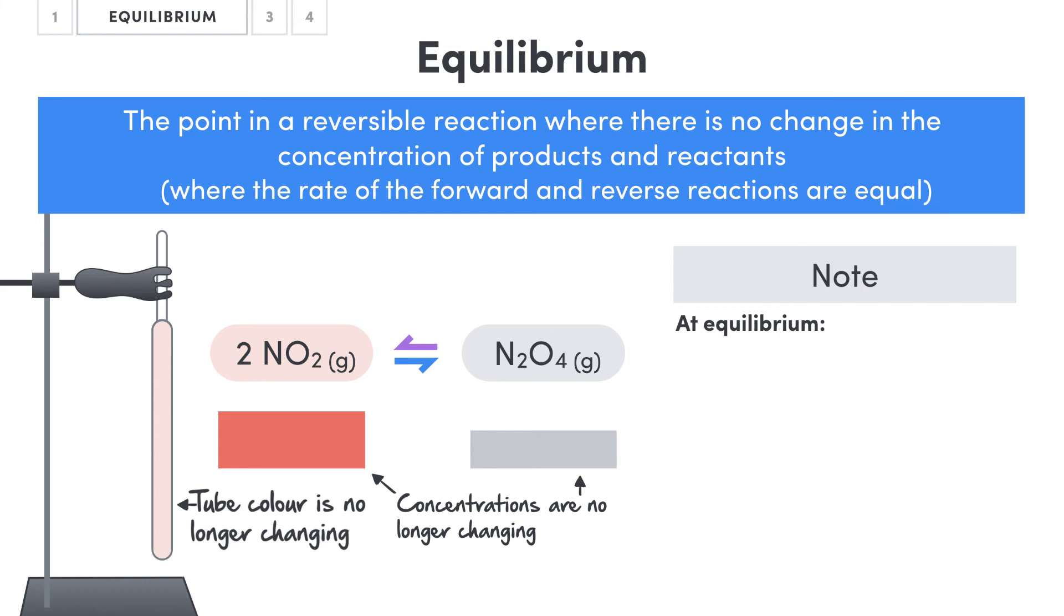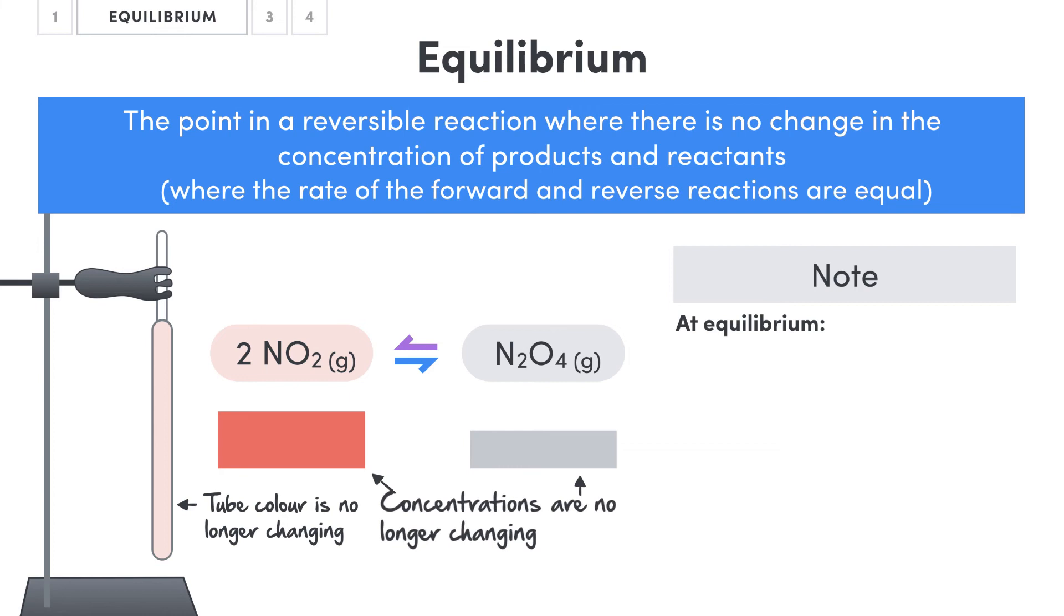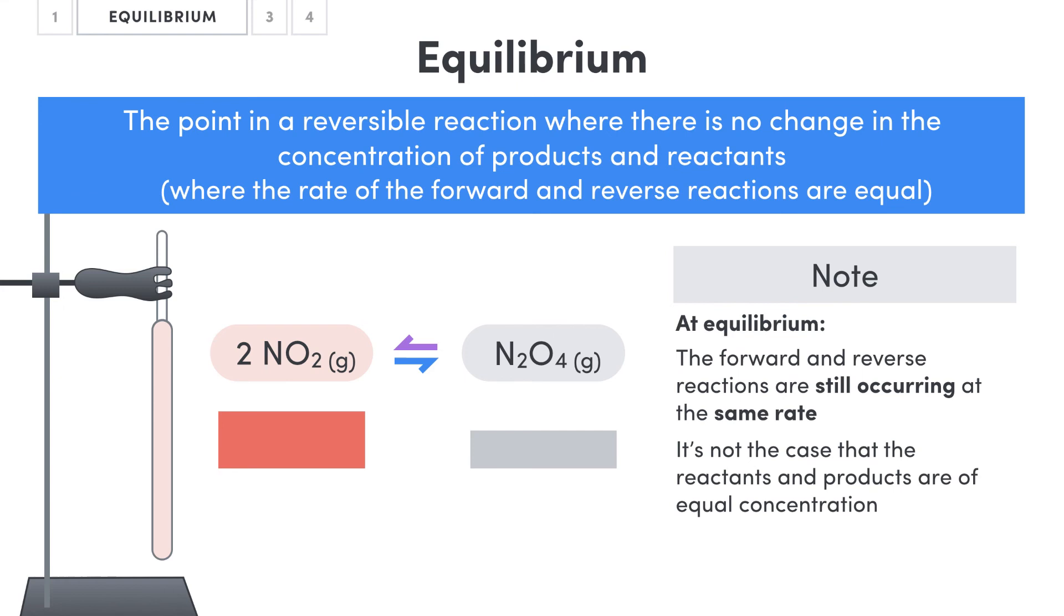It's really important to note that while there's no color change happening, meaning there's no chemical change occurring overall and the concentrations of the reactants and products aren't changing, both the forward and reverse reactions are still occurring just at the same rate. It's also key here to understand that we aren't saying that the reactants and products are of equal concentration. You could still have way more of the reactants than you do products. It's just that the concentrations are staying the same.